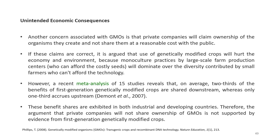Some unintended economic consequences are also present. There is a concern that private companies will claim ownership of the organisms they create and not share them at a reasonable cost with the public. It is argued that use of genetically modified crops will hurt the economy and environment because monoculture practices by large-scale farm production centers will dominate over the diversity controlled by small farmers who cannot afford the technology. However, recent meta-analysis of 15 studies reveals that on average, two-thirds of the benefits of first-generation genetically modified crops are shared downstream, whereas only one-third accrues upstream, in both industrial and developing countries. Therefore, the argument that private companies will not share ownership of GMOs is not supported by evidence from first-generation genetically modified crops.